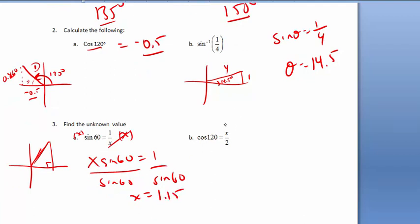And I get x equals 1 divided by bracket sine of 60 is 1.15. And this one's similar. I want x on its own, so I'm going to multiply both sides by 2, so they go away. So I've got 2 times cos 120, and I get x equals negative 1.